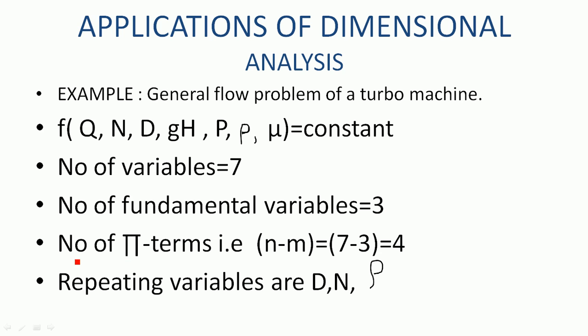Therefore according to Buckingham Pi theorem, n minus m, that is 7 minus 3, is equal to 4. There are 4 pi terms. Repeating variables are diameter, speed and density.